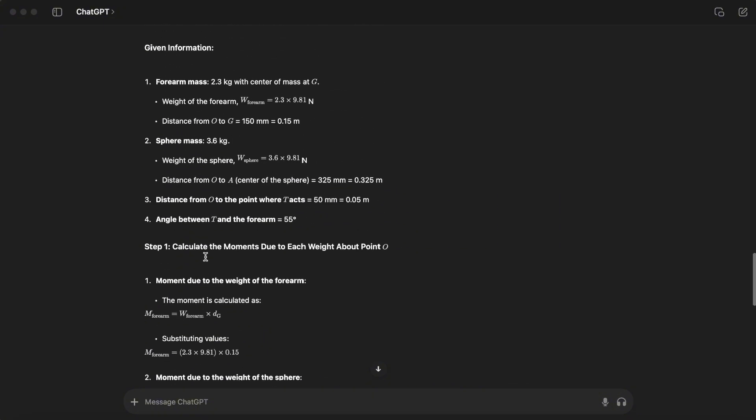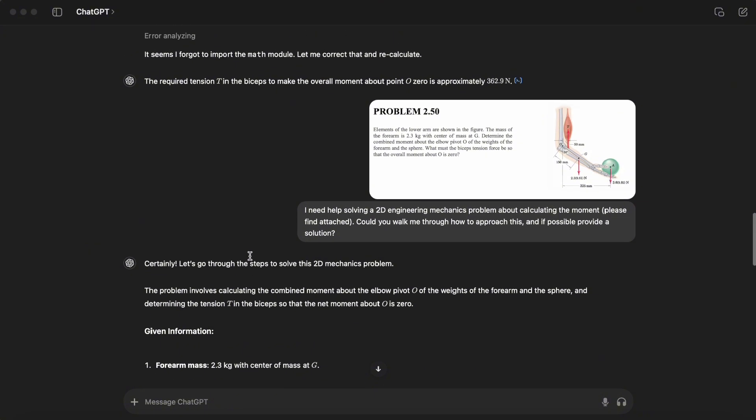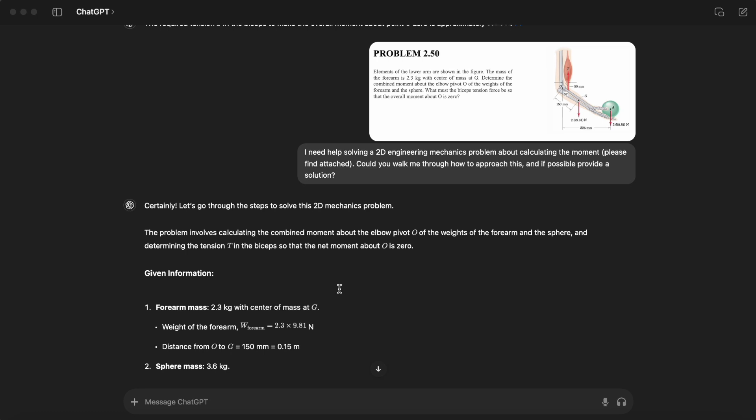Again, that sine of 55 degrees for tension as opposed to moment of the forearm. ChatGPT doesn't seem trustable for this question. This is my first try using ChatGPT to find answers for engineering mechanics questions. This is not a very complicated question, it's a simple 2D moment question. I'll try more on different questions to see if it can be helpful.